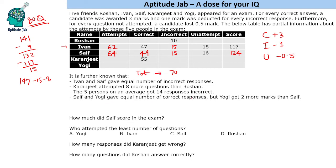Saif and Yogi gave an equal number of correct responses. Saif gave 49, so Yogi will also give 49 correct responses. But Yogi got 2 more marks than Saif, so Yogi got 126 marks. Let us say his incorrect responses are X and unattempted questions are Y. Then X plus Y equals 31, because the remaining questions are 31.